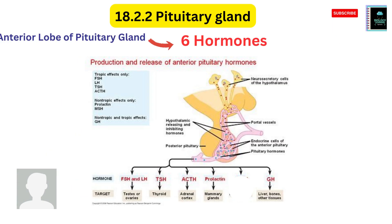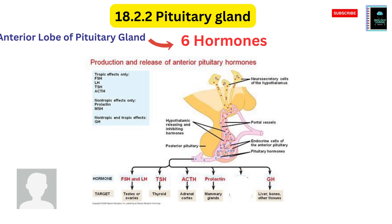The anterior lobe of the pituitary gland secretes six hormones. These six hormones are: FSH (follicle stimulating hormone) and LH (luteinizing hormone), TSH (thyroid stimulating hormone), ACTH (adrenocorticotrophic hormone), prolactin, and growth hormone.